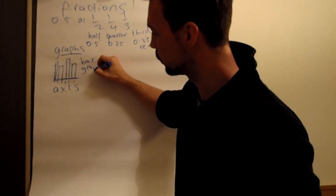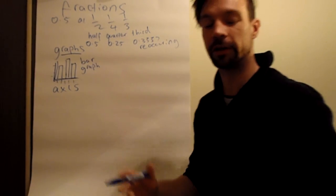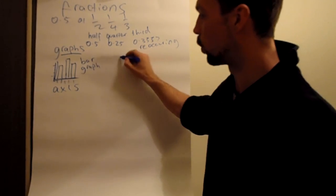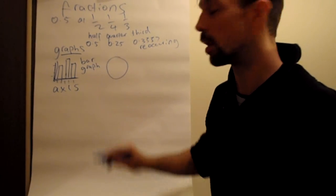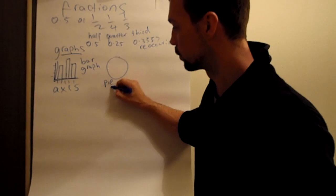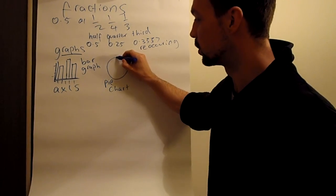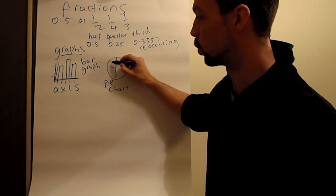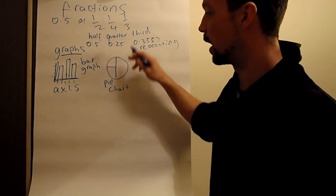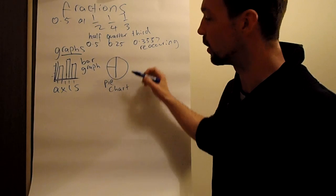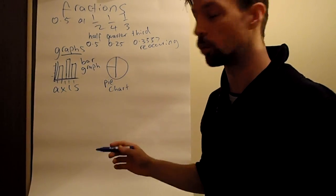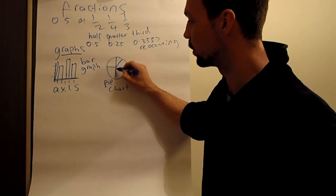The second one is called a pie chart or a pie graph. And this is 50%, this is 25%, and it's divided up. All the information, all the data is in one place and it's divided up into different segments.